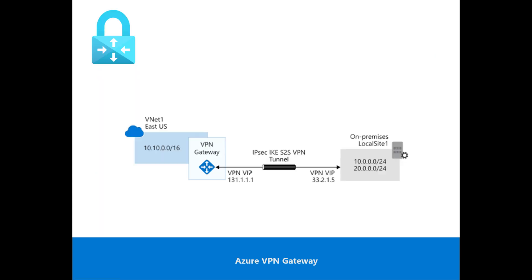An Azure VPN Gateway is a specific type of virtual network gateway used to send and receive encrypted traffic between an Azure virtual network and an on-premises location over the public internet. Azure VPN Gateway can also be used to connect separate Azure virtual networks using an encrypted tunnel across the Microsoft network backbone.